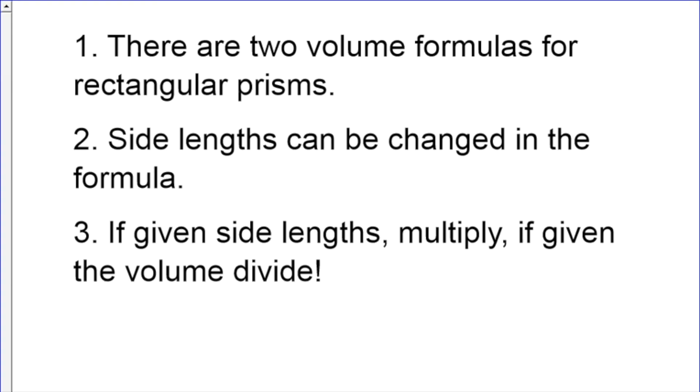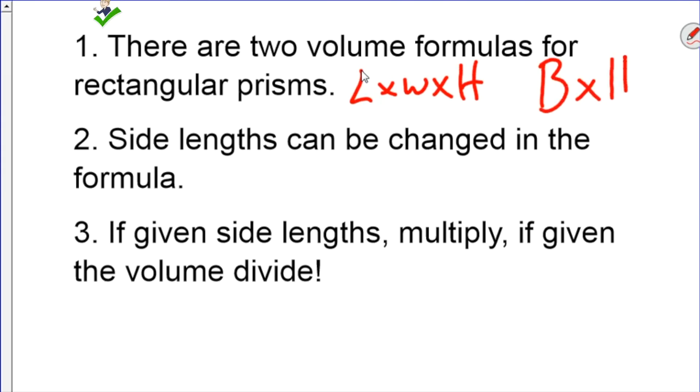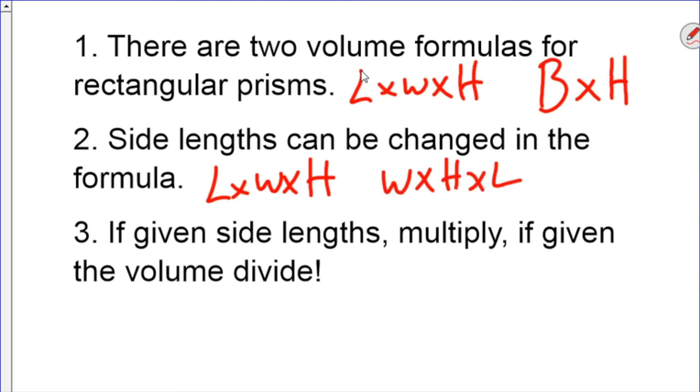What you need to take away from this video. One, for rectangular prisms, there are two volume formulas. Length times width times height, and the area of the base times the height. Both of which work for any rectangular prism. Two, side lengths can be changed in the formula. You can multiply them as length times width times height, or for example, width times height times length. Or rearrange the measurements however you like. Three, if given side lengths, multiply, and if given the volume, divide.